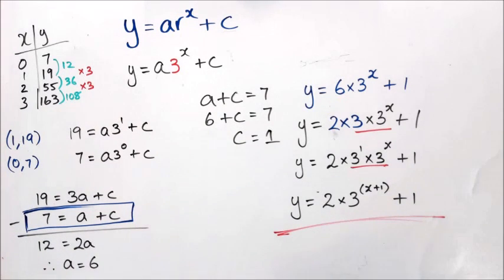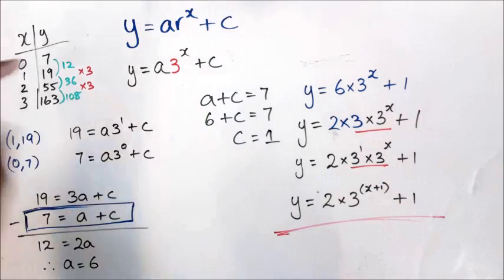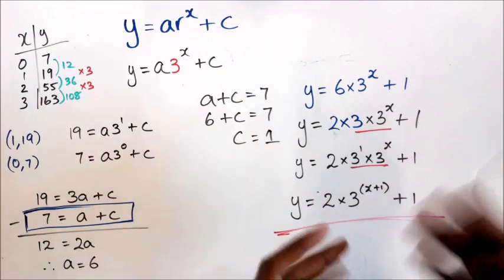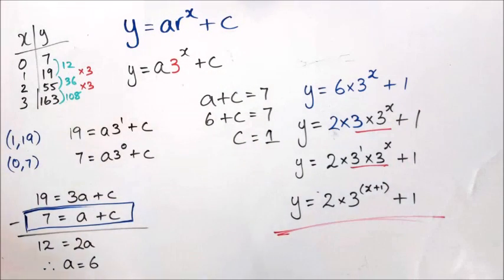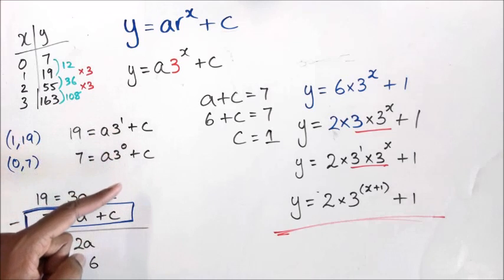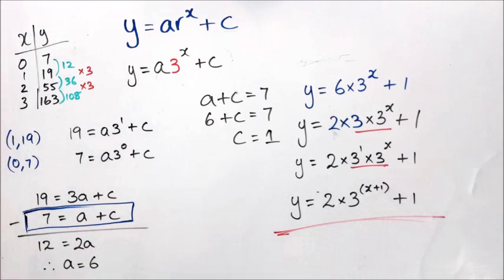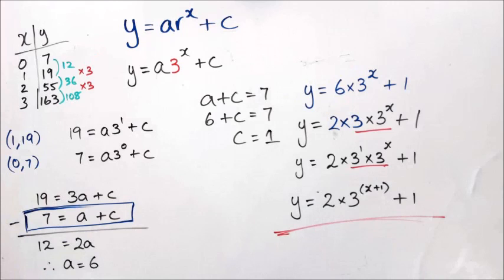That's basically how you get an exponential equation from a table. If you're given a graph, convert it to a table and work from there. Notice how I used x = 0 and x = 1 here because it makes calculations easier. If you don't have 0 and 1, you can use 2 and 3 or whatever other values you have in the table, and it should work out. Thank you for watching.